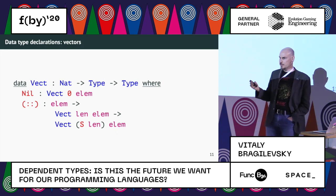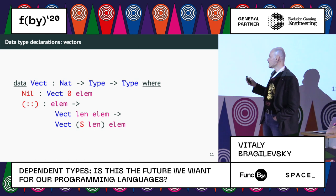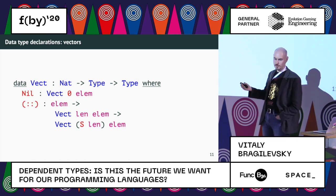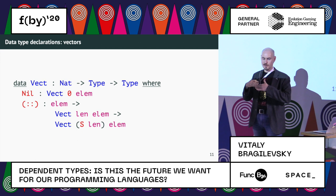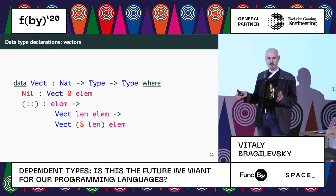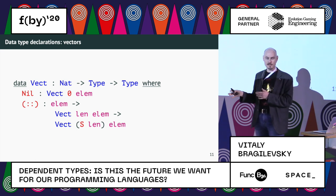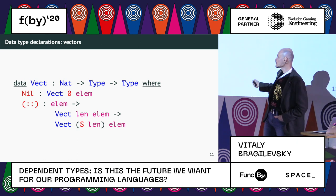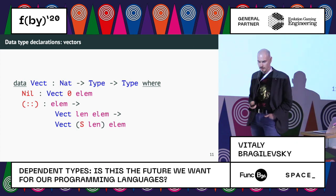This is the declaration in Idris — as usual with lists, you have nil, the vector of zero elements, and you have cons, where you add one element to it. This definition is like generalized algebraic data types in Haskell, but in Idris it looks the same way.